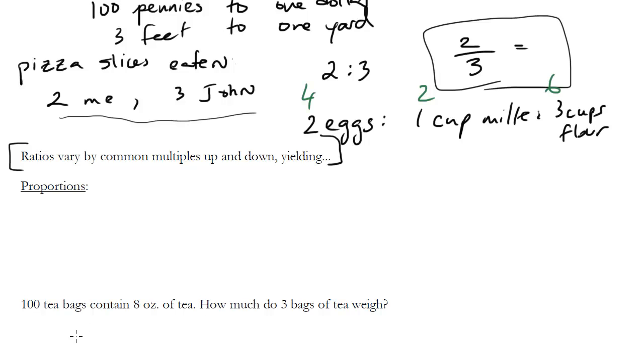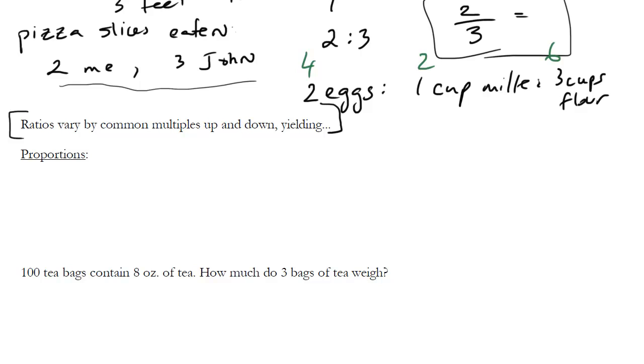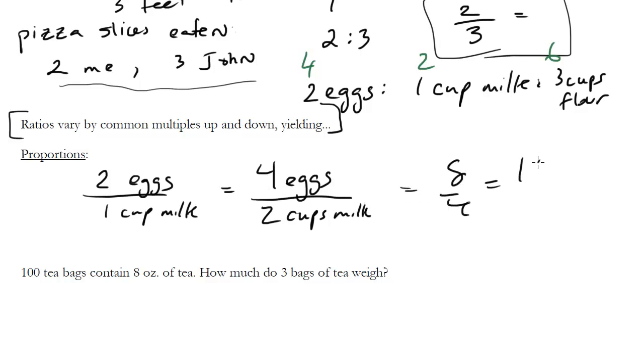Let me write this out more explicitly. Two eggs for every one cup of milk. I could write this is equivalent to four eggs for every two cups of milk, because this preserves the two-to-one ratio. I could also do 8:4, 16:8, and so on. It's preserving that ratio.